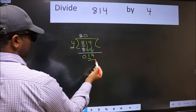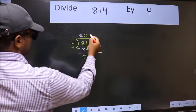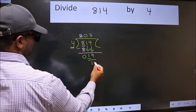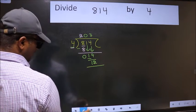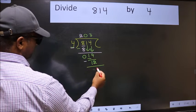Now 14, a number close to 14 in the 4 table is 4 times 3 is 12. Now we should subtract. We get 2.